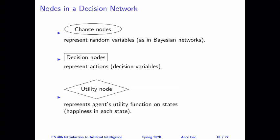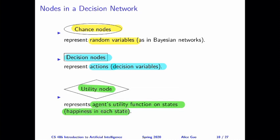For the next step, when constructing a decision network, we convert the random variables and decision variables into nodes. There are three kinds of nodes. The first are chance nodes, which correspond to random variables — the same as nodes in a Bayesian network; these are things we have no control over. The second type are decision nodes, which represent decision variables, or in other words, the actions we can take. The third type is the utility node, used to represent an agent's utility function on states — in other words, the agent's happiness in each state.